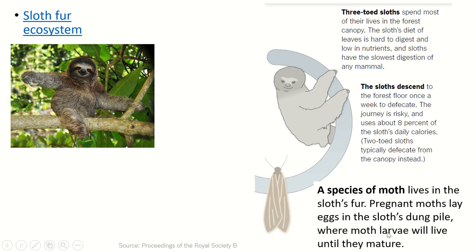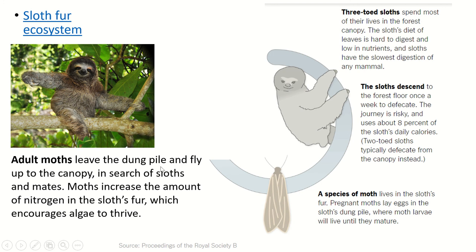This is good news for a moth species that lives in the sloth's fur. The adult moths live in the sloth's fur. After they mate, the pregnant female moths go down to the ground with the sloth and lay their eggs in the pile of dung on the ground. The larvae — the worms that hatch out of the eggs — then live in the dung pile and feed off the dung until they mature into adult moths. The adults then leave the dung pile and fly up into the canopy to search for a sloth.